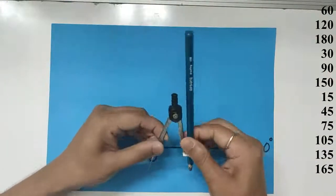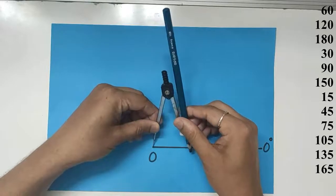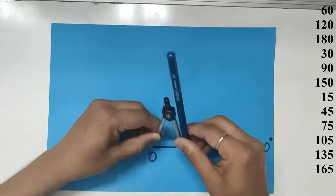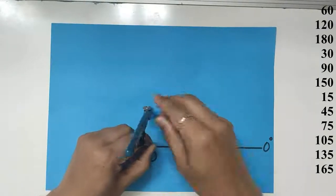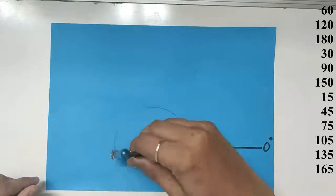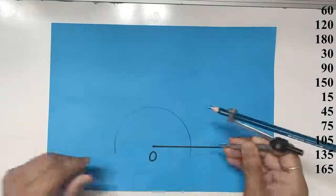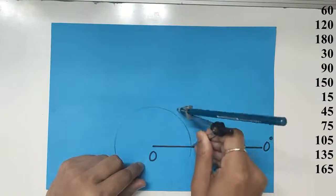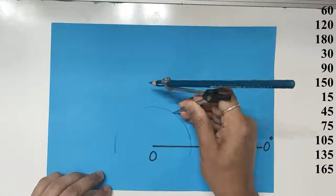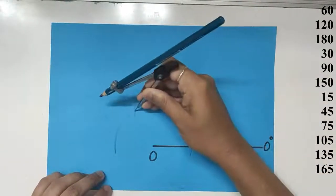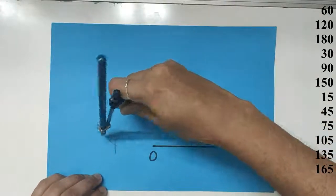Now take your compass, at least three fingers gap between the point and the pencil, and make a semicircle. Using the same radius, don't change it, give three arcs cutting the semicircle.